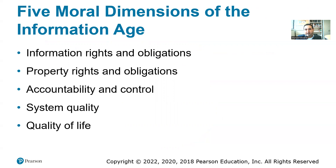Key ethical dimensions include: information rights and obligations — who has the right to information collected about consumers, the consumer or the organization collecting it; property rights and obligations, including copyright and software piracy; accountability and control — who is held accountable for ethical violations; system quality — whether we can tolerate systems that don't function 100%; and quality of life.